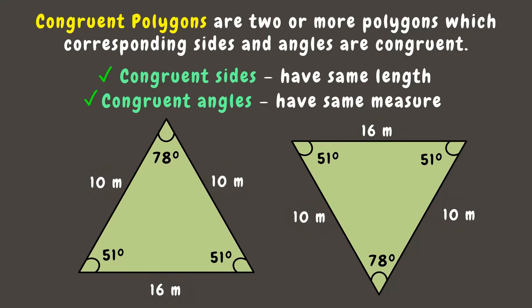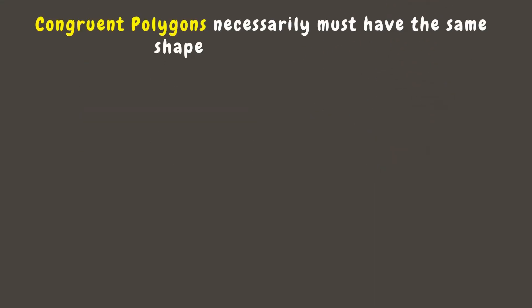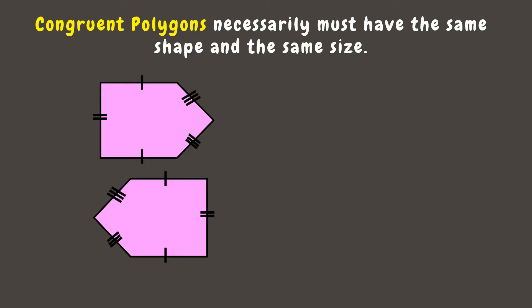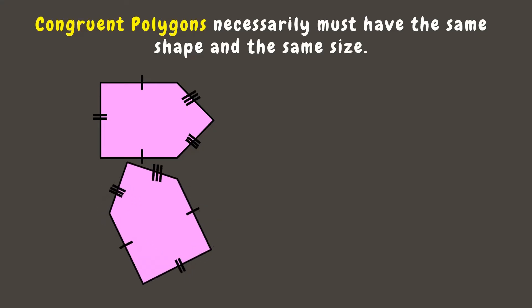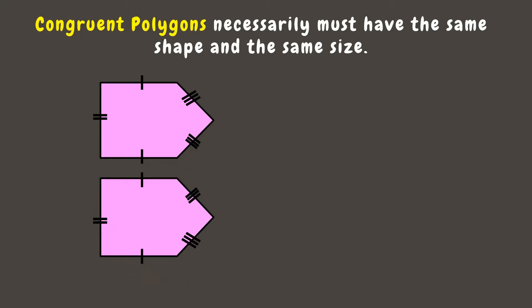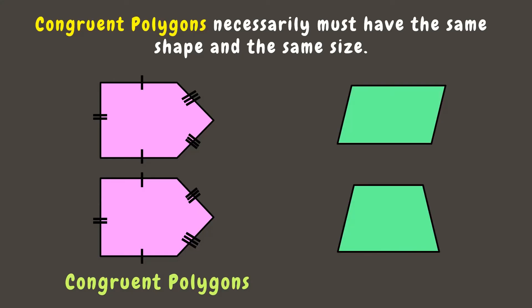Since they have congruent sides and angles, they are congruent polygons. Congruent polygons must necessarily have the same shape and same size. Going back to our earlier sets of polygons, the first set has the same shape, and the tick marks indicate that the corresponding sides are congruent. The second polygon is just a rotated version of the first, so they are congruent. The second set of polygons are not congruent since they don't have the same shape and size.